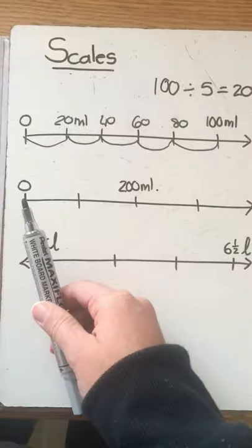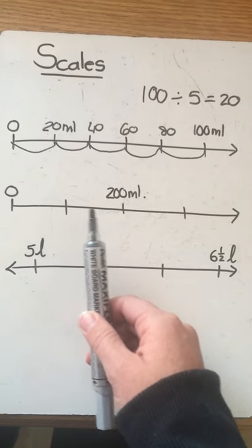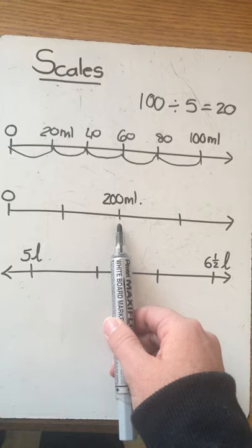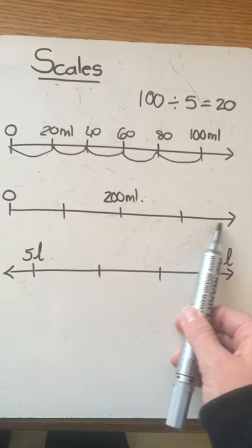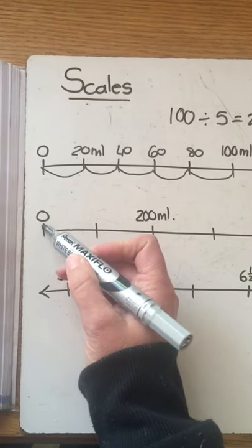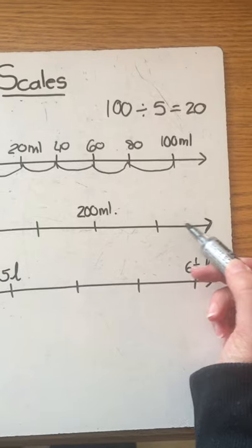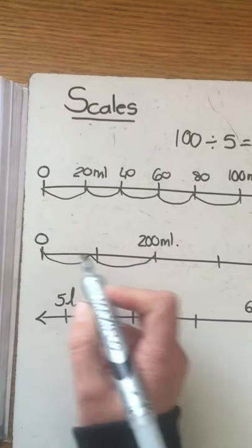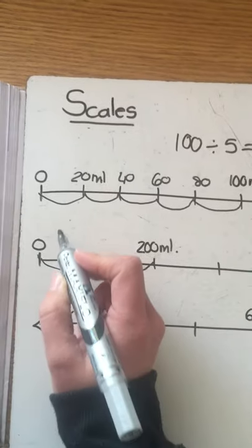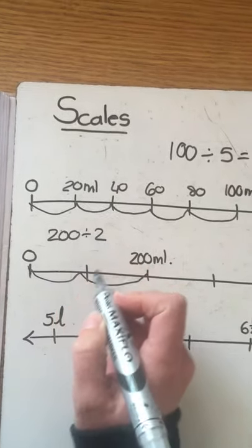The next one starts with zero. Then there's one space, two spaces and then we get 200 milliliters. Then there's another space and then it goes on. So that little line there shows that's where it starts at zero and the arrow there shows that it goes on. So if there's two spaces between zero and 200 I can say 200 divided by two because there's two spaces is 100.